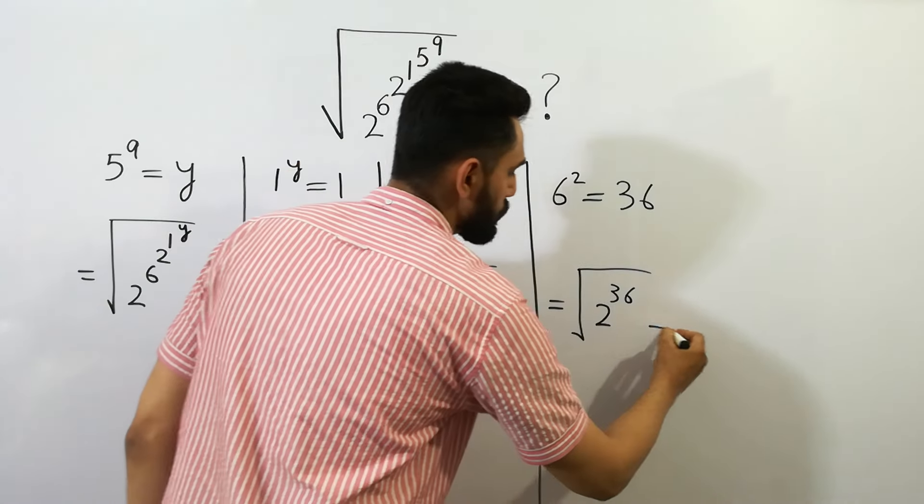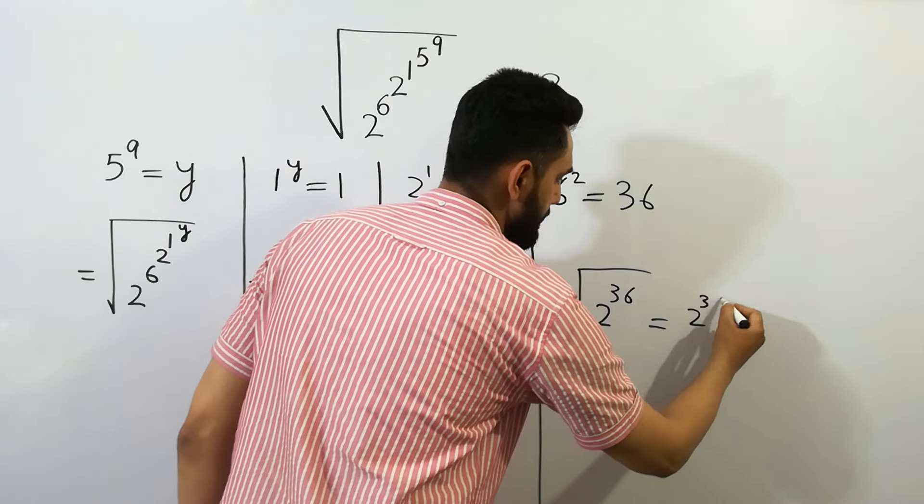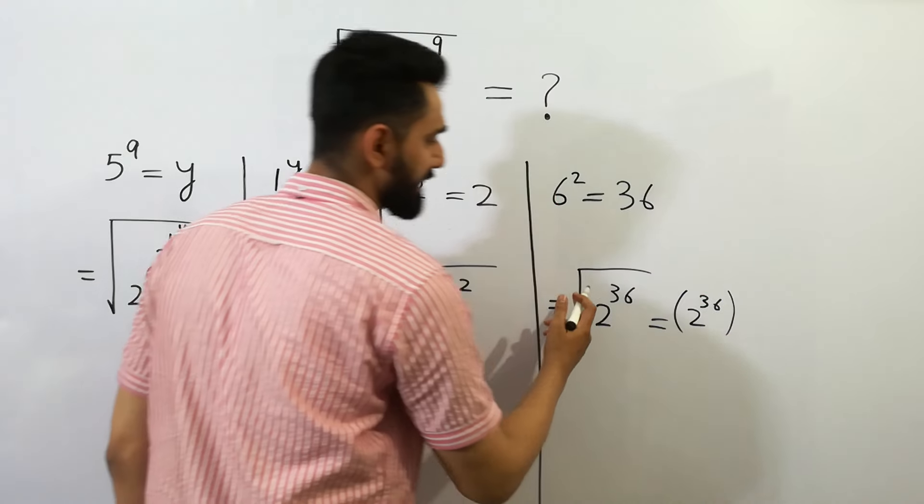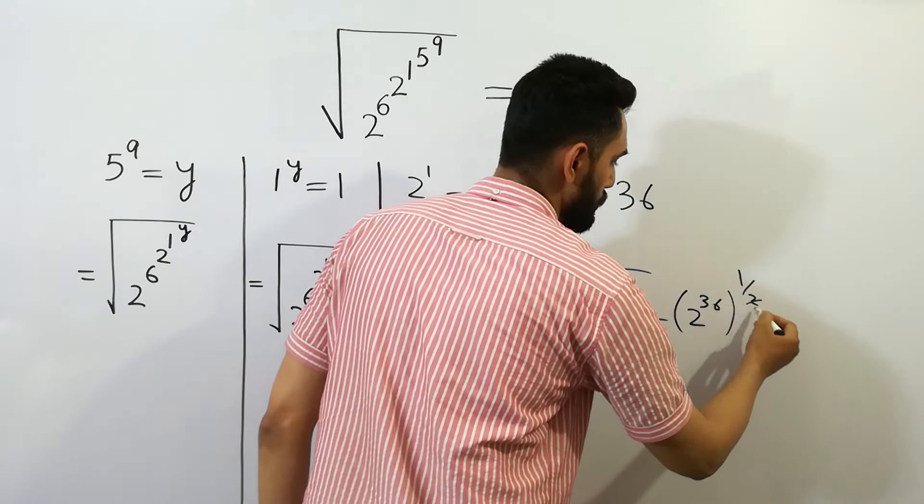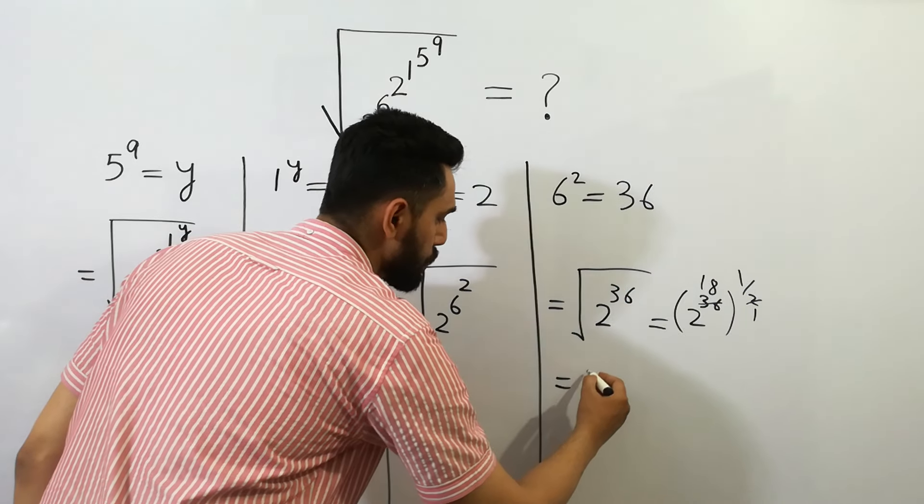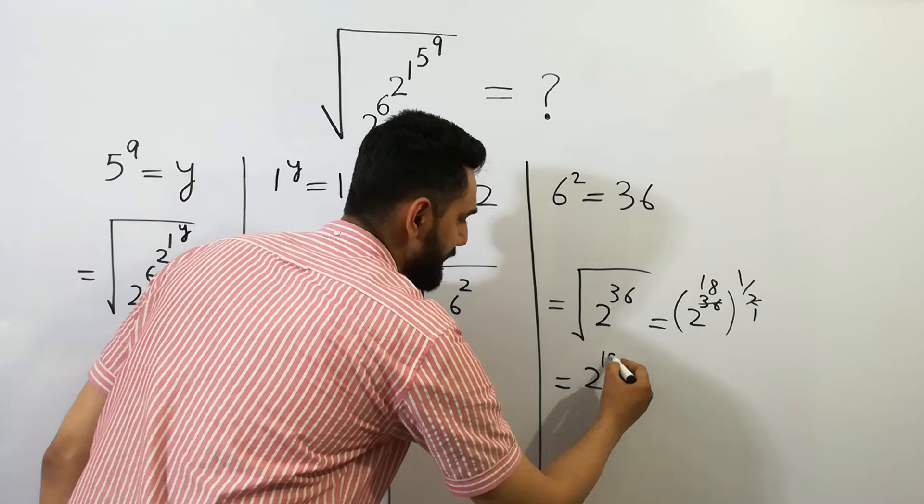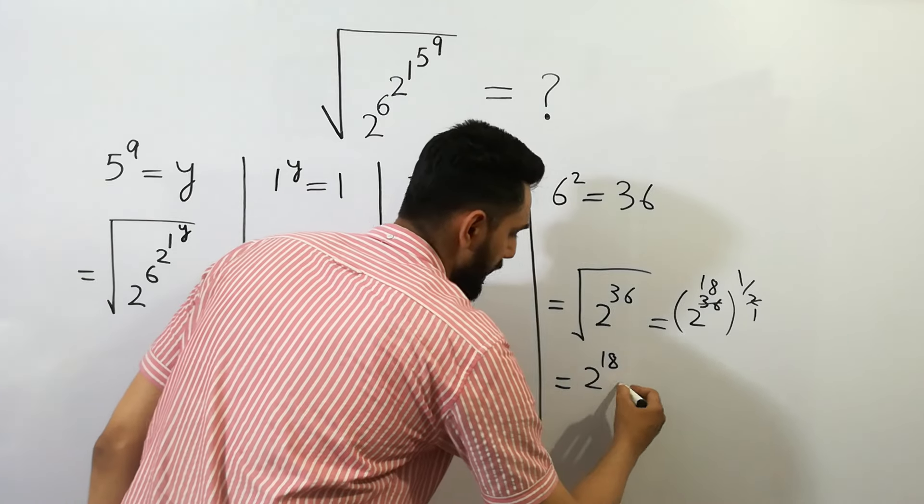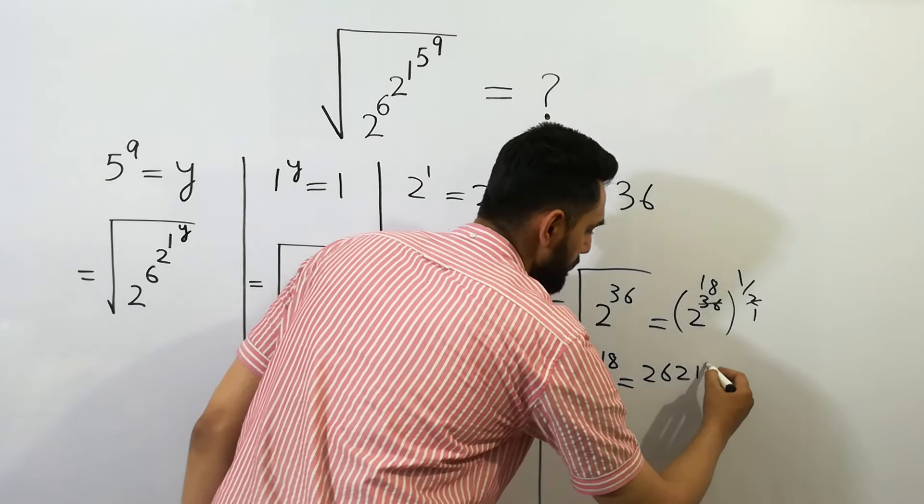And 2 to the power 36 as it is. And square root is equal to 1 by 2, so 2 to the power 36 becomes 2 to the power 18, which is also written as 262,144.